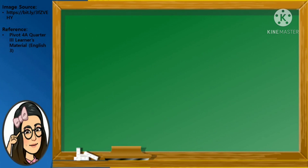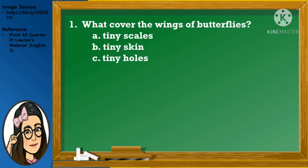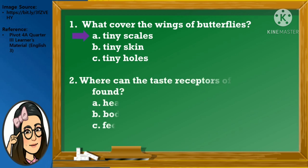And here go our questions. Number 1: What covered the wings of butterflies? A. Tiny scales, B. Tiny skin, or C. Tiny holes. Excellent! The wings of the butterflies are covered with tiny scales. Number 2: Where can the taste receptors of butterflies be found? A. Head, B. Body, or C. Feet. Good job! The taste receptors of butterflies can be found on their feet.